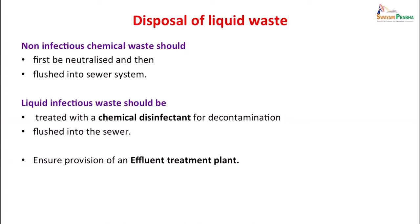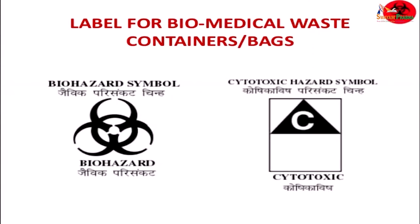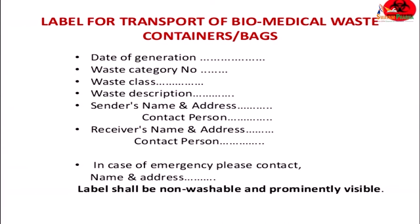As far as disposal of liquid waste is concerned, non-infectious chemical waste should first be neutralized and then flushed into the sewer system. Liquid infectious waste should be treated with chemical disinfectant for decontamination, then flushed into the sewer, and finally there should be a provision of an effluent treatment plant through which the sewer transmission takes place. For packaging and labeling, one should seal and label the container before transportation to the common collection site. All bags are to be labeled properly before transportation and each ward must maintain a log book as to how many packages were collected and sent. They should have biomedical waste container and bag labels with a biohazard symbol or cytotoxic hazard symbol depending on the kind of waste. For transport, containers should have the date of generation, waste category, waste class, description of waste, sender's name and address, receiver's name and address, and emergency contact — all labels should be non-washable and prominently visible.